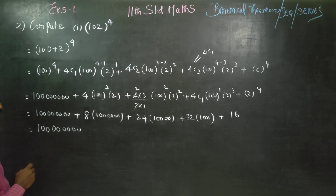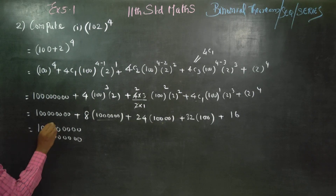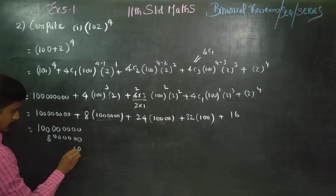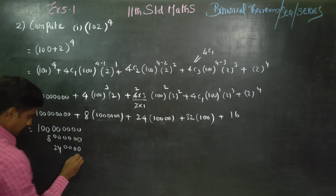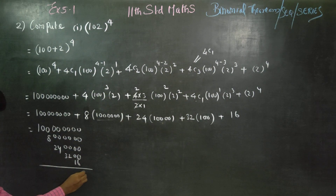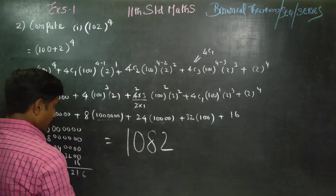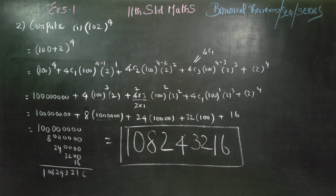Adding all the terms together: 1,00,00,00,000 + 80,00,000 + 24,00,000 + 3,200 + 16. Therefore the answer is 1,08,24,3216. The final answer is 108,243,216.